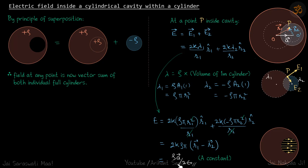Our answer becomes rho A vector by 2 epsilon which is a constant, which means field inside this cavity is constant and its direction is towards A vector which is the line joining the center of the cylinder and the cavity.